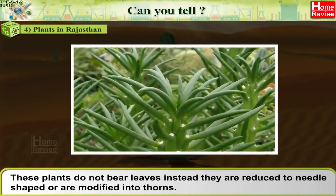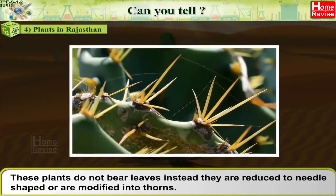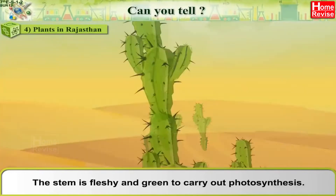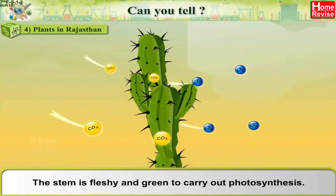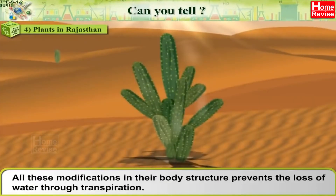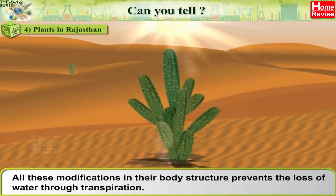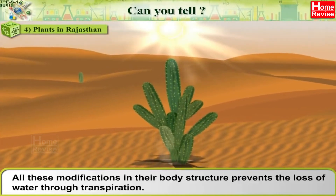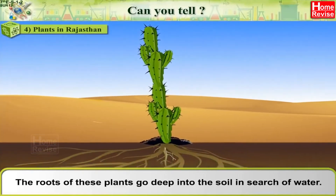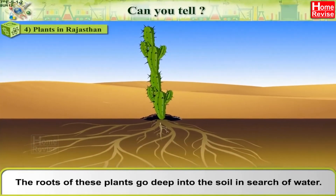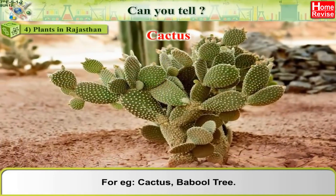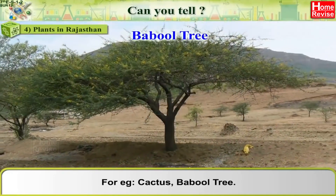Plants in Rajasthan: these plants do not bear leaves; instead they are reduced to needle-shaped or are modified into thorns. The stem is fleshy and green to carry out photosynthesis. It has a waxy coating on its surface, which prevents the loss of water through transpiration. The roots go deep into the soil in search of water. For example, cactus and baobab tree.